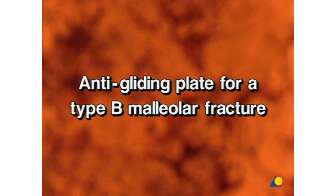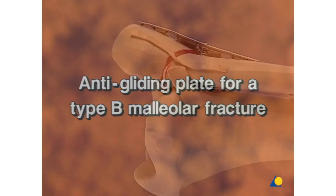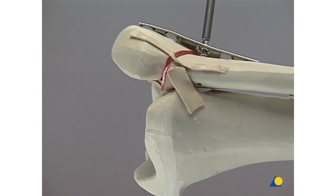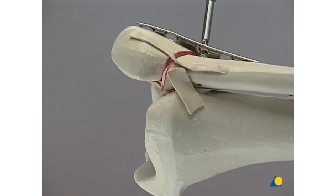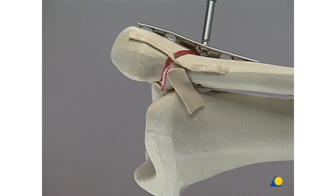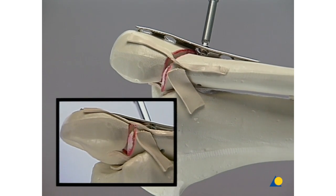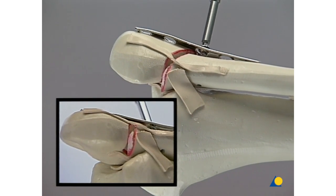Anti-Gliding Plate for a Type B Malleolar Fracture. The one-third tubular plate is applied dorsally. The fracture is reduced by tightening the first screw in the proximal main fragment.